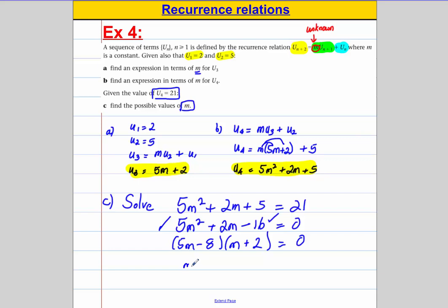So therefore m on the one hand is 8 over 5 and m on the other hand is equal to negative 2. And it asks us for 2 possible values and we have found the possible values there and we are done in this case.